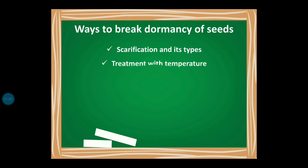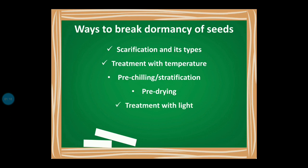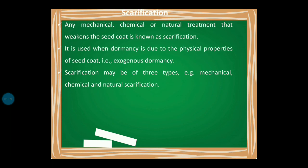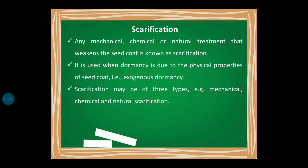We also have treatment with temperature, which includes two subcategories: pre-chilling, also known as stratification, and pre-drying. Then we have treatment with light, and treatment with chemicals or growth regulators. In this particular lecture I'll be taking the first part — scarification and its types — and the rest will be taken in part four. So, what do we mean by scarification? Any mechanical, chemical, or natural treatment that weakens the seed coat is known as scarification.